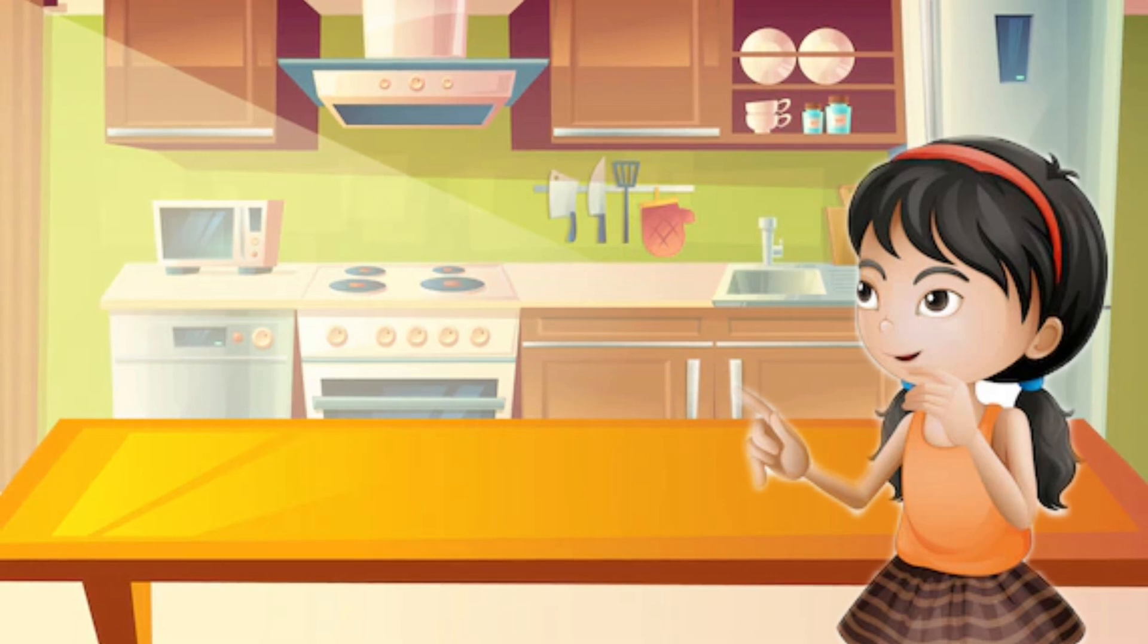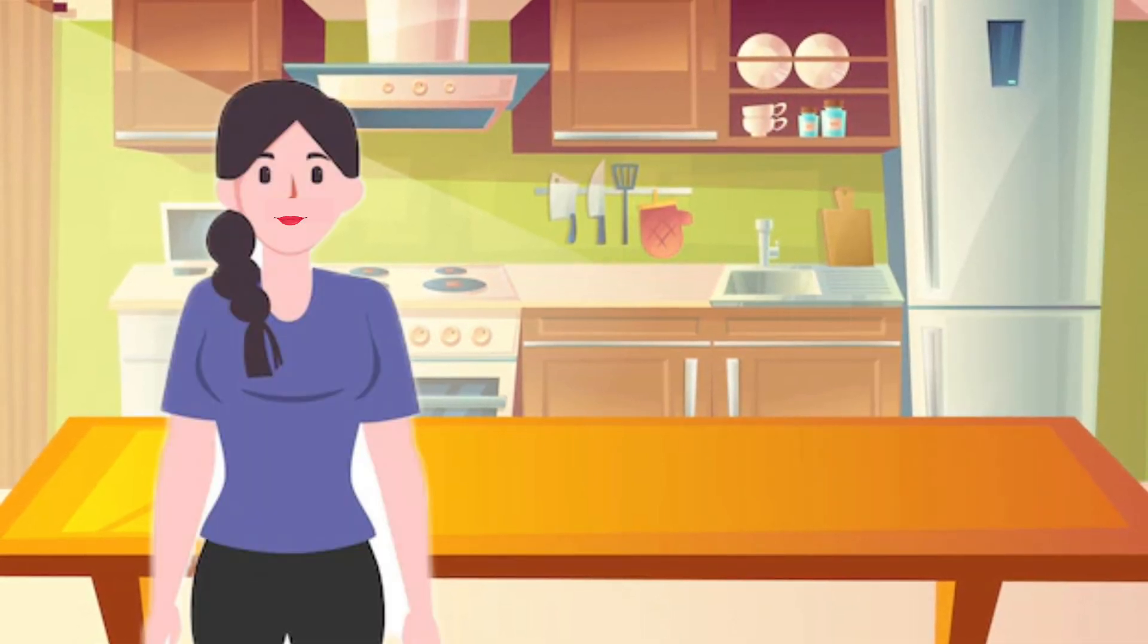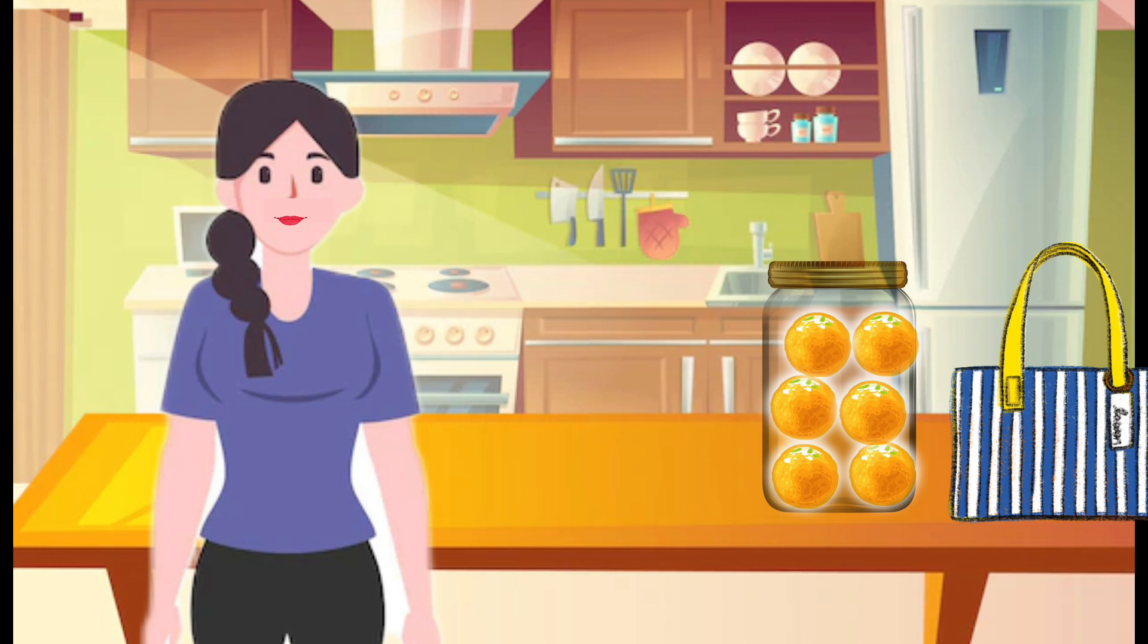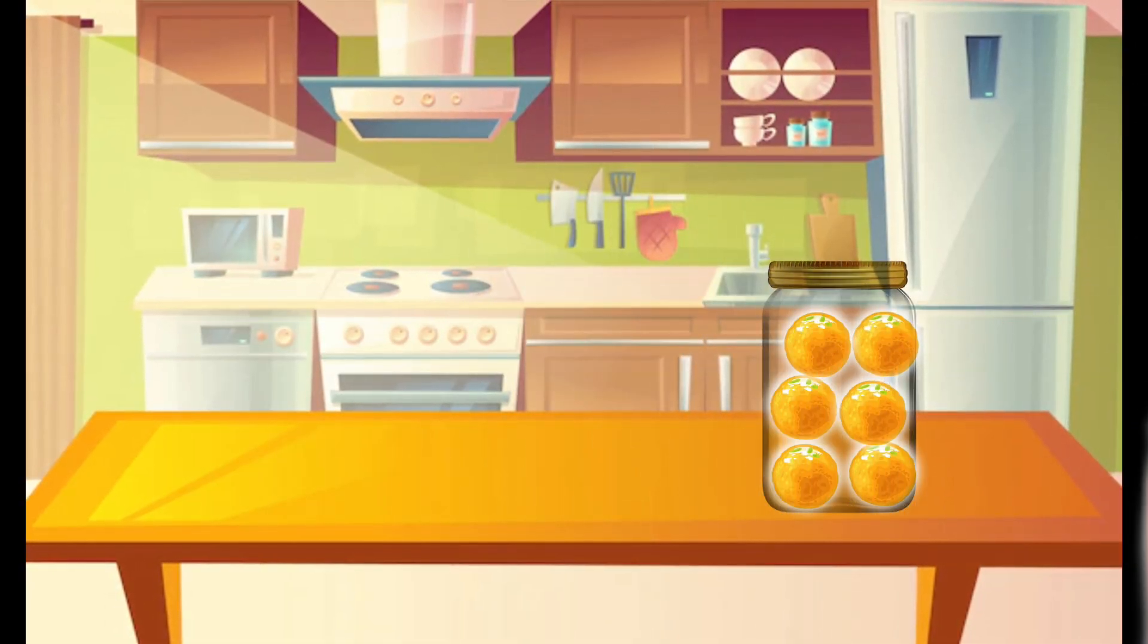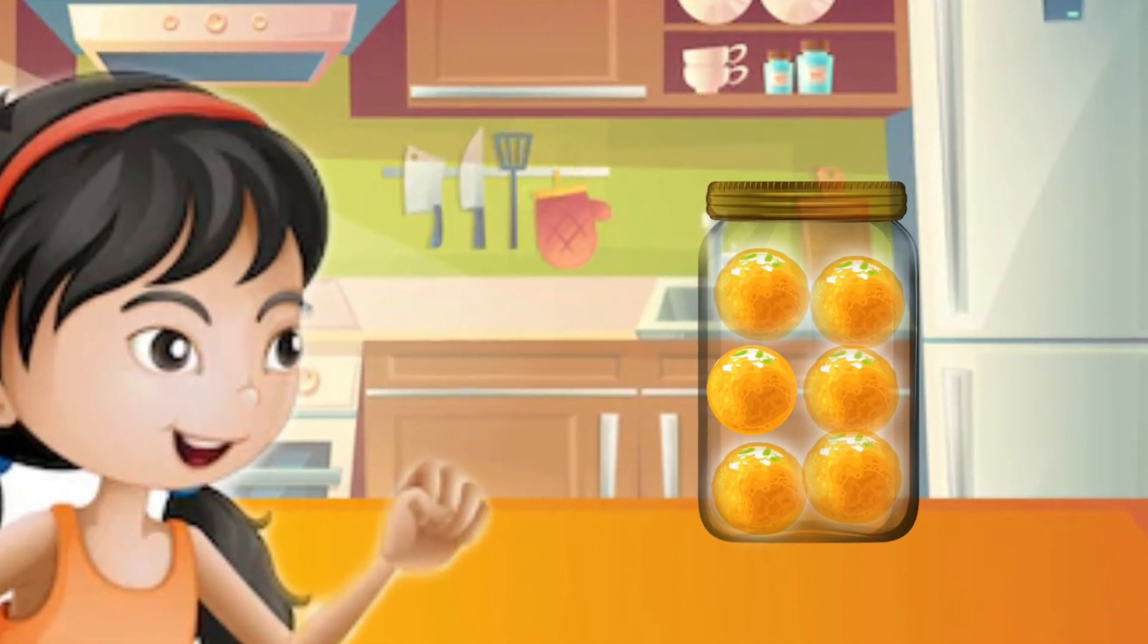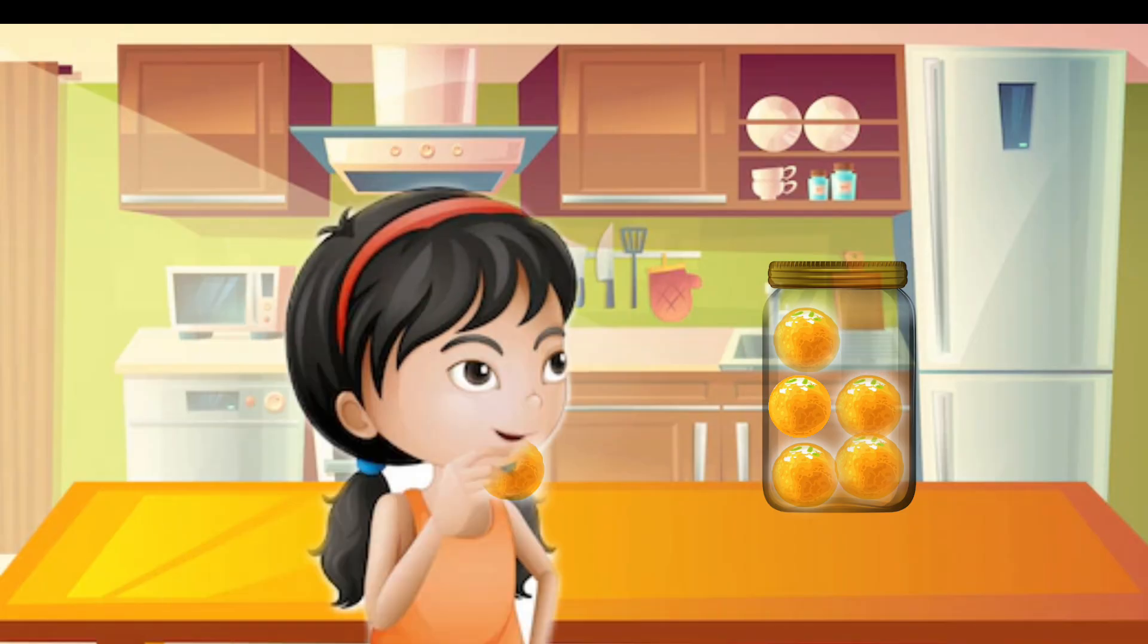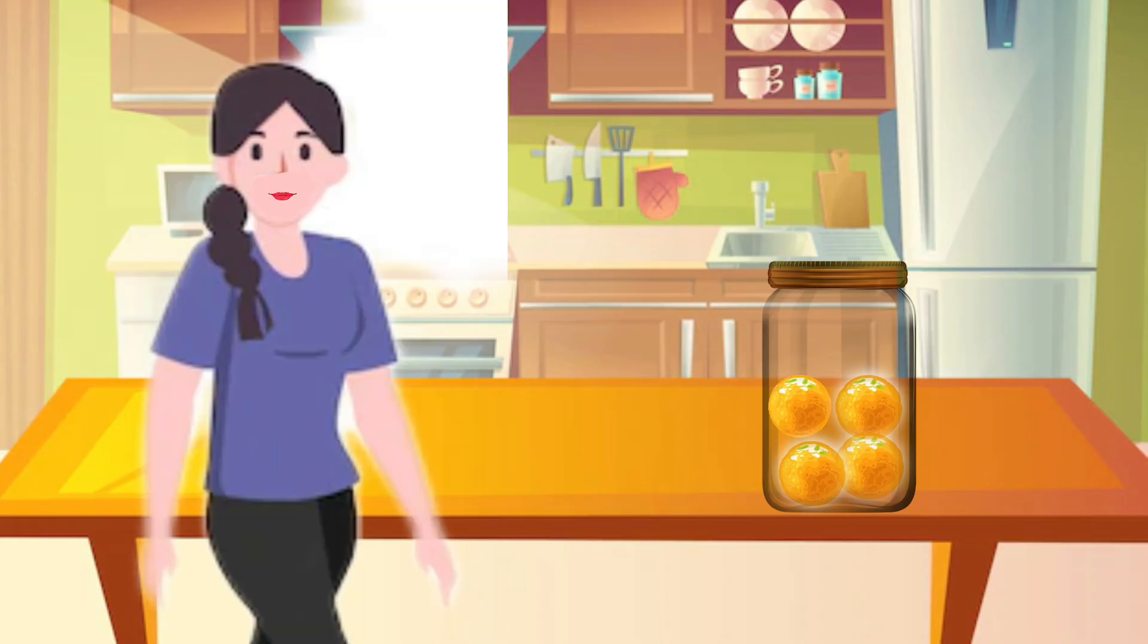Let's see. This is Rama and this is her mother. Mother made six ladoos and kept them in a jar, then she went to the market to buy vegetables. When Rama came from school, she saw the ladoos. The ladoos were very tempting. Rama ate two ladoos. When mother came home, she saw four ladoos in the jar.